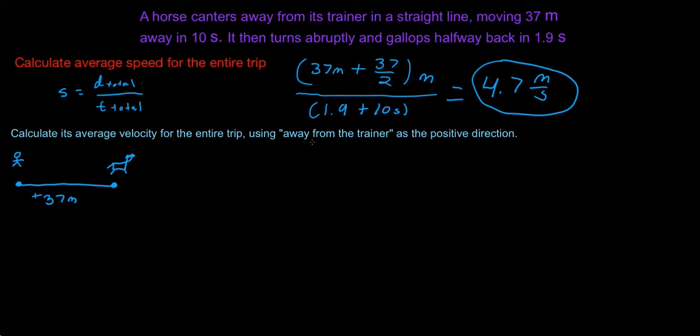Velocity is a vector, meaning we have both magnitude and direction. Magnitude just means size. Direction is just plus or minus.